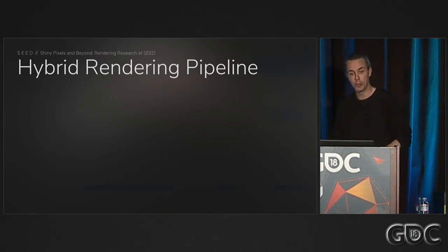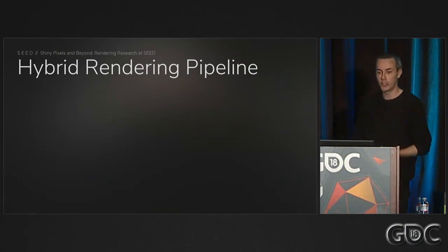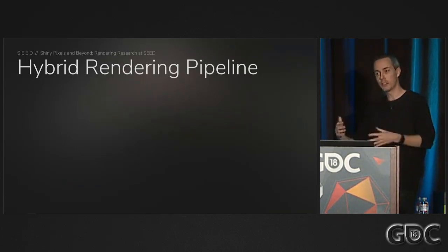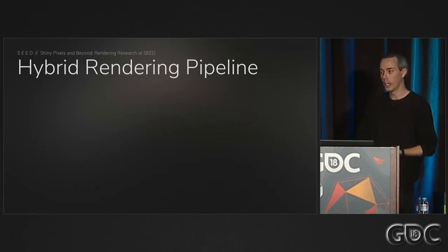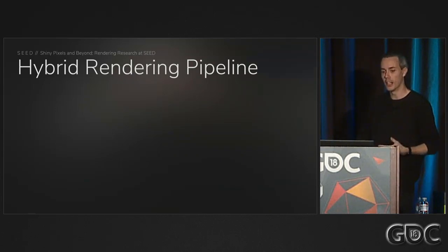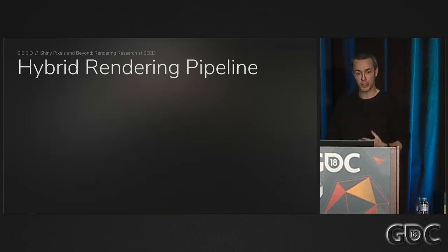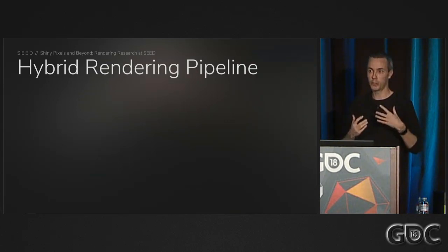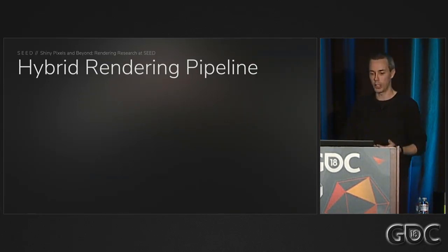What we built in this demo with Halcyon was essentially a hybrid rendering pipeline. There are ways of using ray tracing for everything — we do that in our reference mode — but there are performance costs. So what we built was a very pragmatic hybrid rendering pipeline, exploring how different techniques fit into an overall pipeline that can deliver the type of visuals we're after.